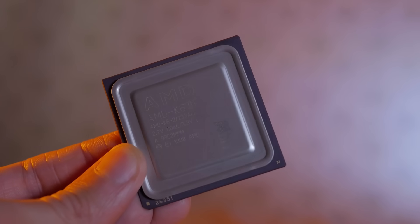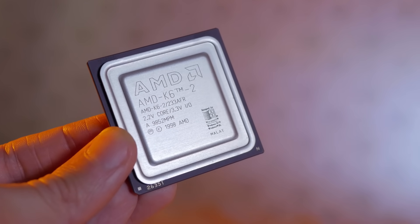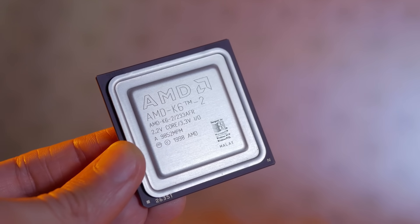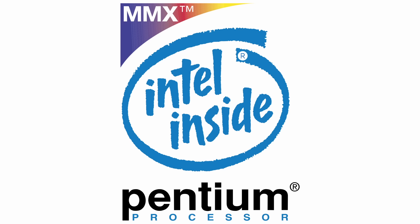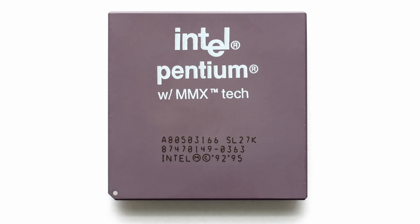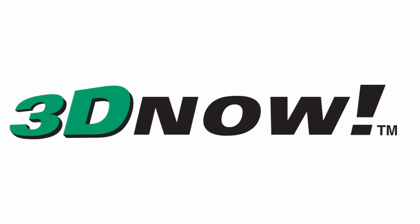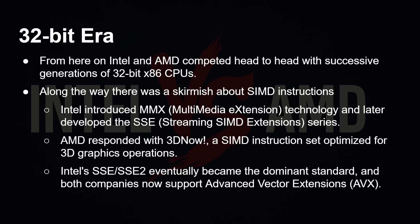From there, Intel and AMD went head-to-head with successive generations of 32-bit x86 CPUs. Along the way there were skirmishes about SIMD instructions: Intel introduced MMX, which they didn't initially license to AMD, then there was SSE, and AMD responded with 3DNow. Eventually Intel's SSE and SSE2 became the dominant standards, and both companies now support Advanced Vector Extensions, AVX. While these instruction set differences caused interesting performance variations in games and applications, nowadays that situation has largely settled down.